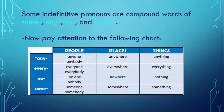Some Indefinite Pronouns are compound words of some, any, no, and every. Now pay attention to the following chart.